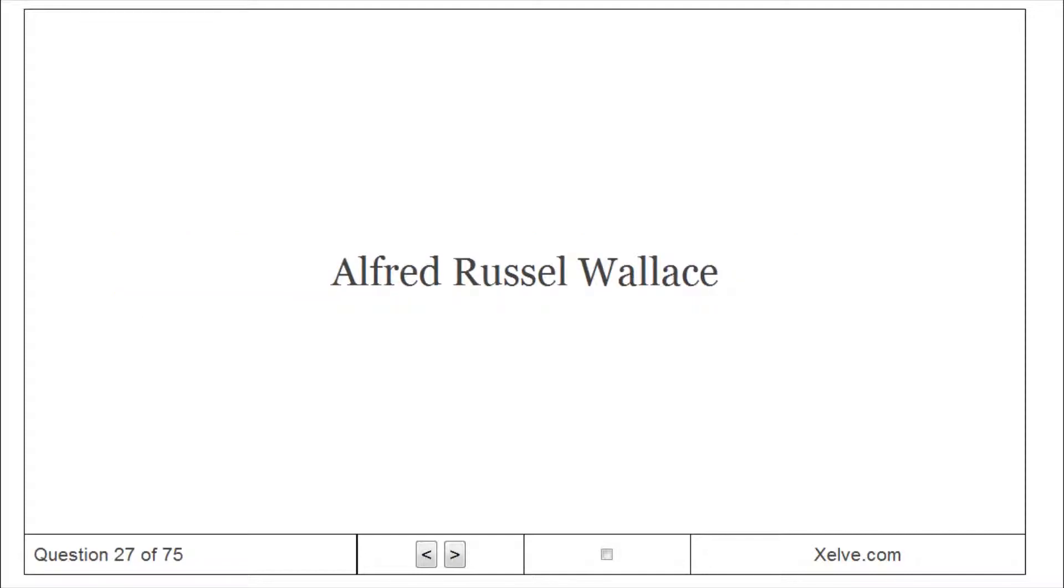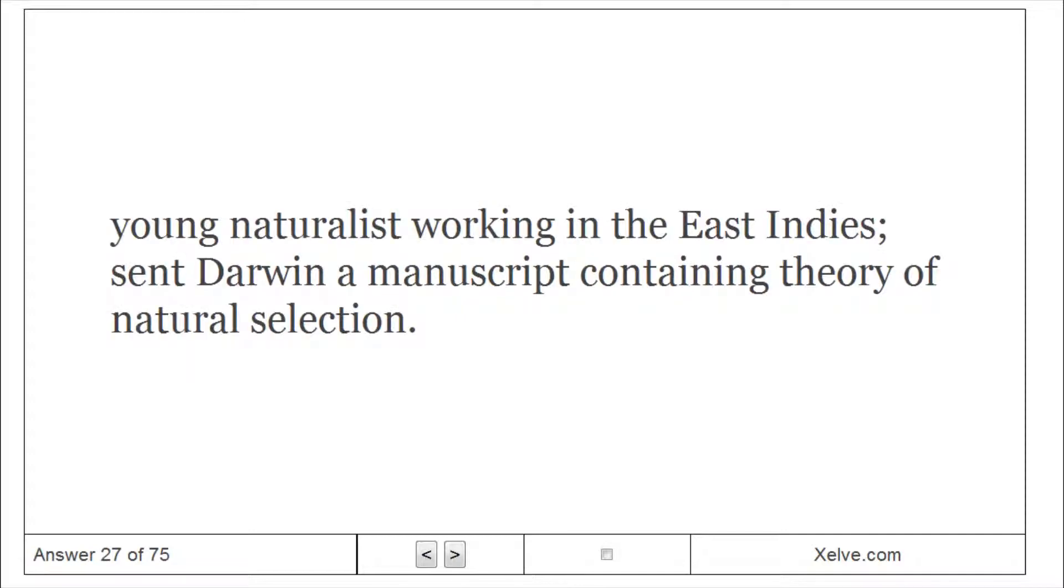Alfred Russel Wallace: Young naturalist working in the Eastern Indies, sent Darwin a manuscript containing theory of natural selection.